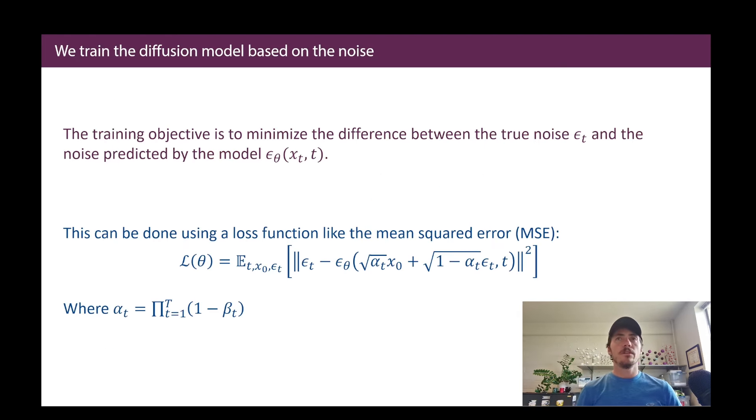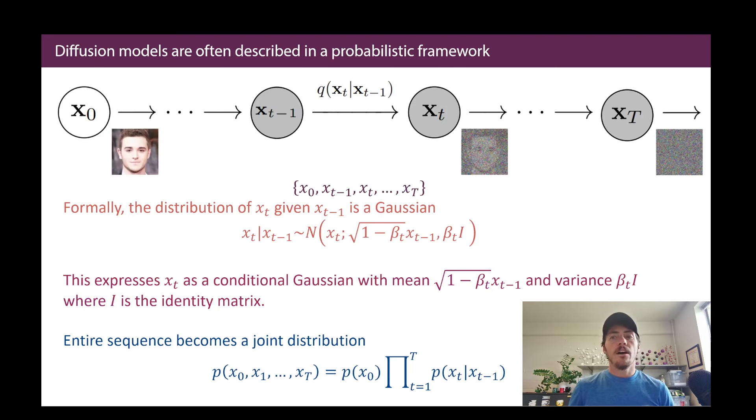Therefore, training the diffusion model is about training it based on the noise. The training objective is going to be to minimize the difference between the true noise, epsilon t, and the noise that is predicted by our model, epsilon theta of the previous step and some time step. So we can do this lots of different ways, but typically it's going to be something like a mean squared error. We're trying to minimize that loss.